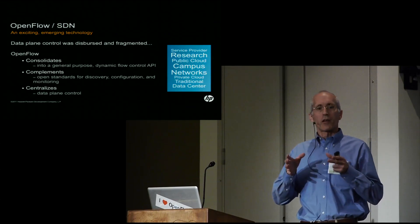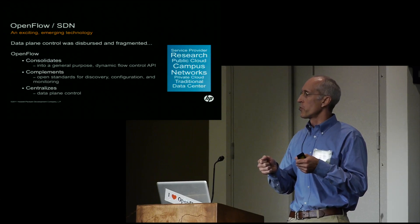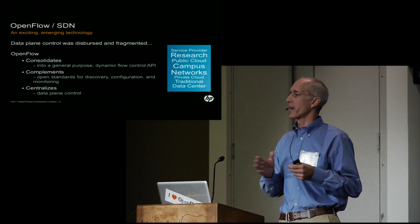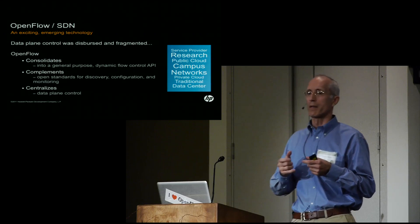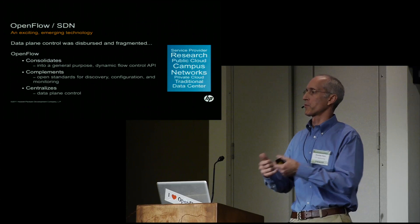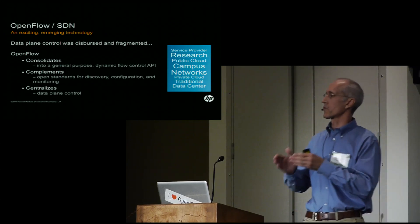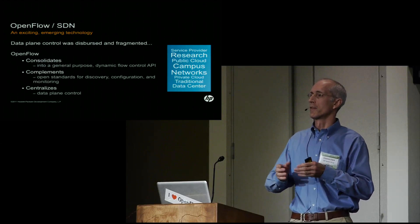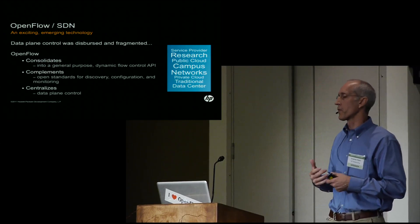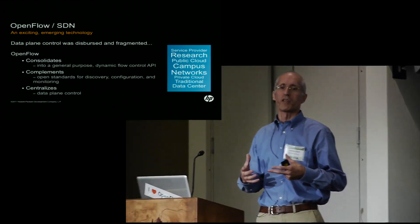And even if you did go to one of the devices and looked inside it, what you'd find is that flow control was fragmented inside also. We had ACLs, we had QoS, we had policy-based routing, policy-based forwarding. You'd configure them each somewhat differently from each other. What OpenFlow did — what it allowed us to do — is to consolidate the flow control into a single API.